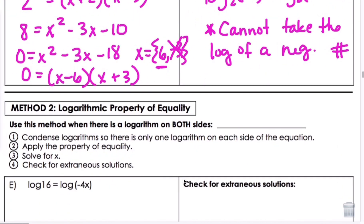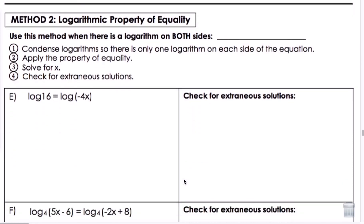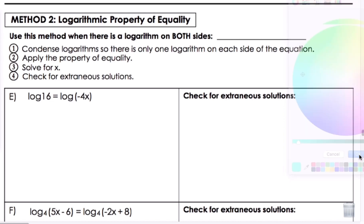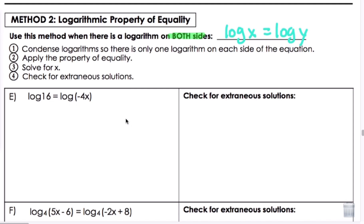That was method 1. Now method 2 — the logarithmic property of equality. Use this method when there is a logarithm on both sides of the equation, like log x equals log y. Condense logarithms so there is only one on each side, then apply the property of equality and solve for x. Check for extraneous solutions.